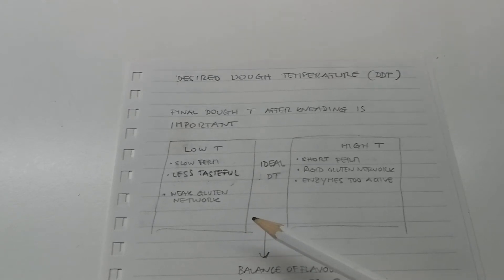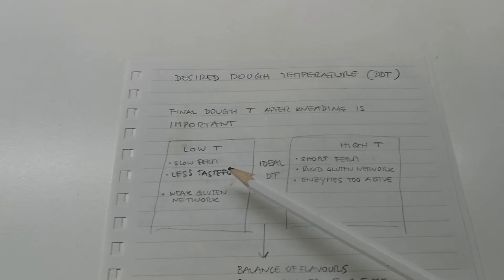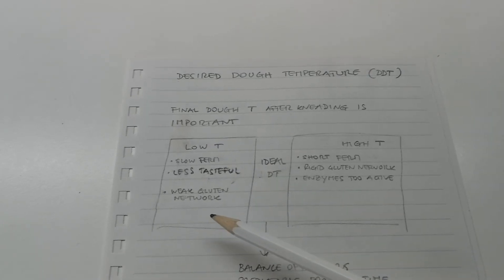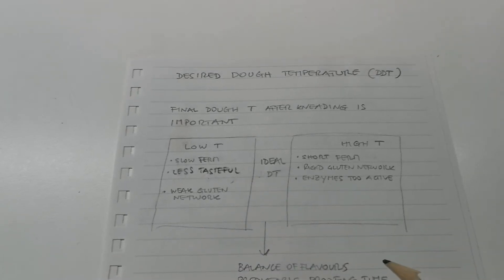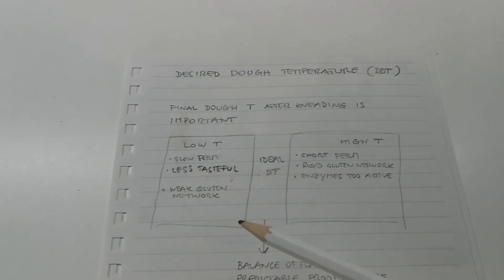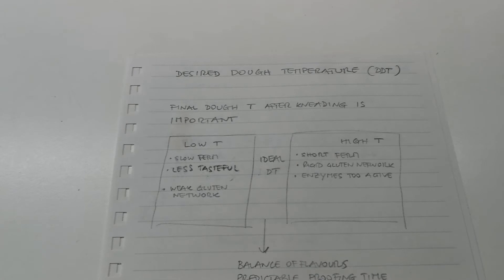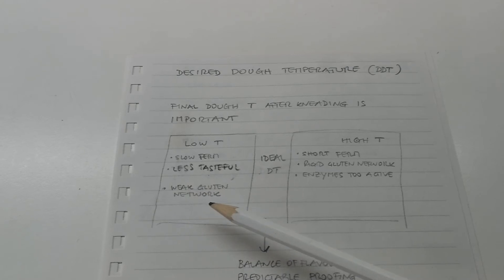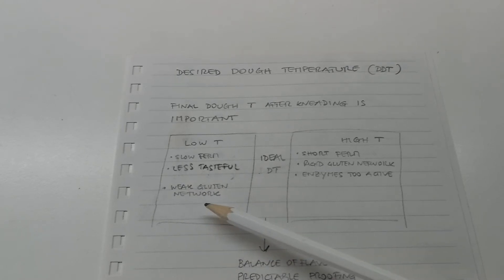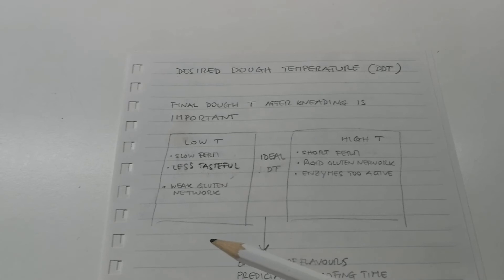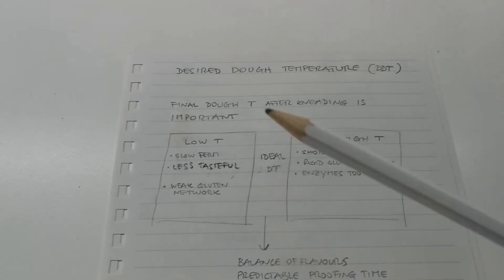For example, if we have a low temperature we have very slow fermentation, and the final product — the bread — is going to be less flavorful. This is due to the different kinds of bacteria activated at low temperature versus those active at ideal temperature. A very low temperature also creates a weak gluten network, which doesn't allow a proper oven spring.